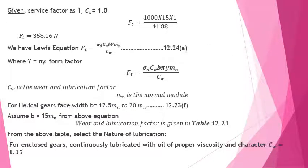With service factor CS = 1 and velocity V = 41.88 m/s, substituting into FT = 1000 × P × CS / V with power = 15 kW, we get FT = 358.16 N. This is the tangential tooth load on the gear.